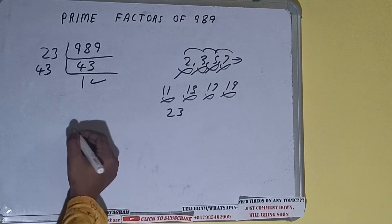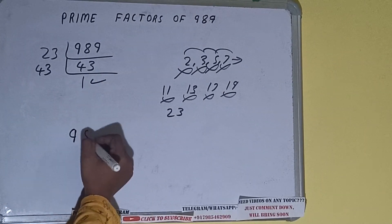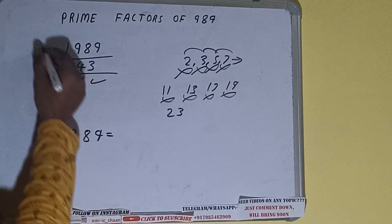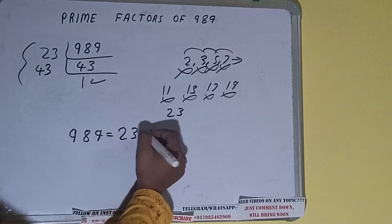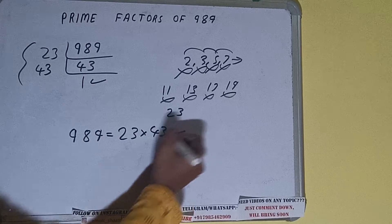Once we get 1, we need to stop and do one last thing. The prime factorization of 989 is equal to multiplying whatever we have on the left-hand side, which is 23 × 43. That will be the answer.